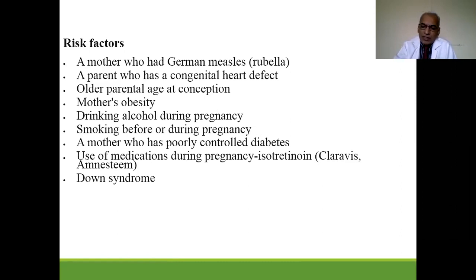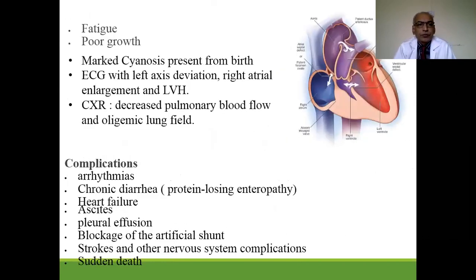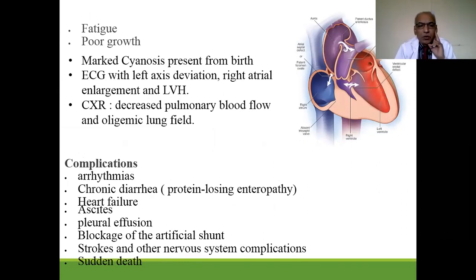In tricuspid atresia, the child has fatigue, poor growth, and marked cyanosis from birth. ECG shows left axis deviation with right atrial enlargement and left ventricular hypertrophy. Chest X-ray shows decreased pulmonary blood flow and oligemic lung fields. Complications include arrhythmia, chronic diarrhea, heart failure, ascites, pleural effusion, stroke, and sudden death.